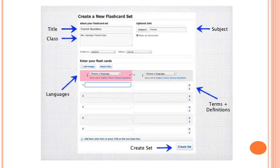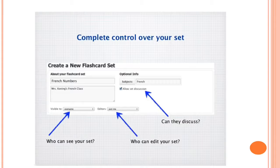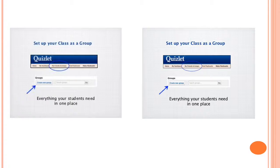In the next step you need to give the title of your flashcard set, class, and subject, then choose languages, terms, and definitions. For complete control of your set, you need to choose who can see your set, whether they can discuss it, and who can edit it. Set up your class as a group – everything your students need in one place.